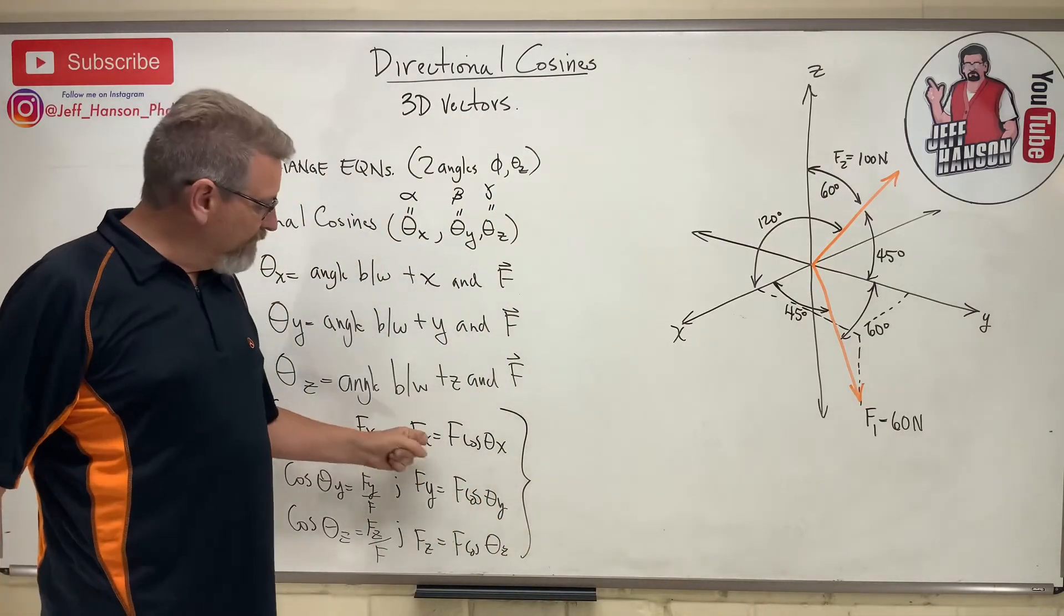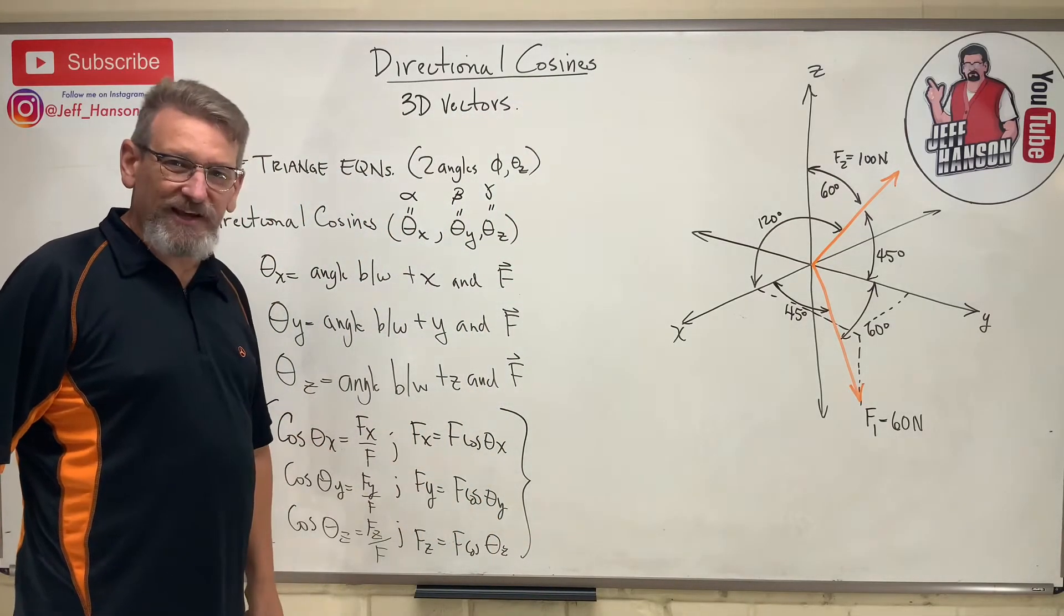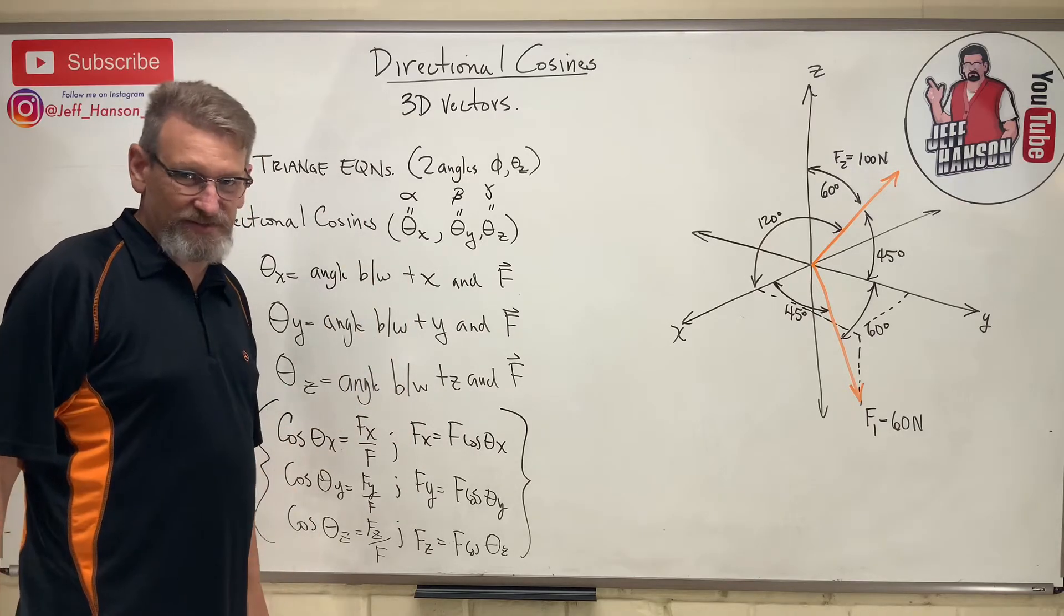Just look at the dimension arrows. This dimension arrow goes from the x-axis to vector f. This one goes from the z-axis to vector f. This one goes from the y-axis to vector f. So that is theta x, that is theta z, that is theta y. How hard is that? You just take those numbers, plug them in. Now you got your x, y, z, your i, j, k. We can add vectors like nobody's business.